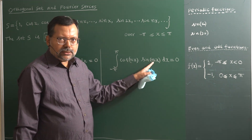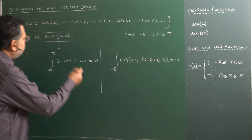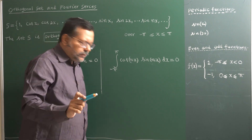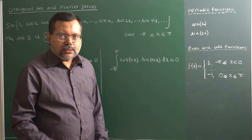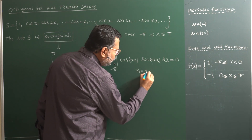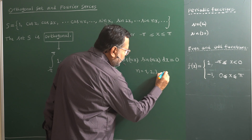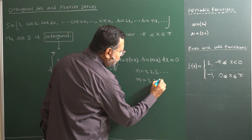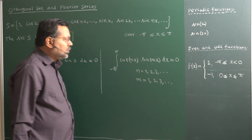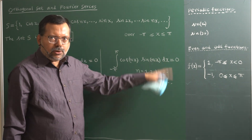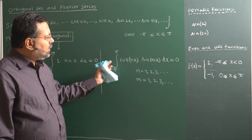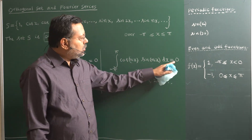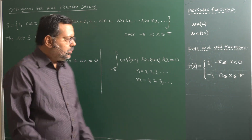Here n and m are integers. You can see that the set contains 1x, 2x, 3x, 4x, and so on up to nx, so n ranges over 1, 2, 3, etc. Similarly, m also equals 1, 2, 3, etc. This property is called the orthogonality property, and one can easily verify it by performing the actual integration using knowledge of integral calculus to show the result is zero.